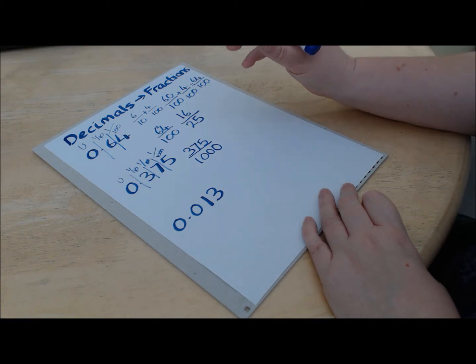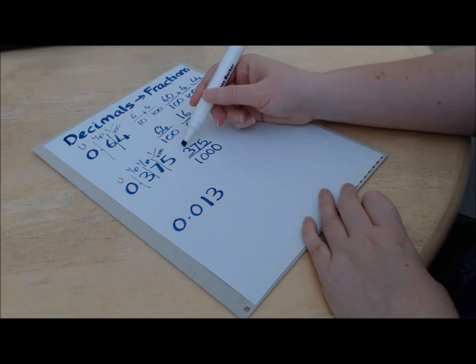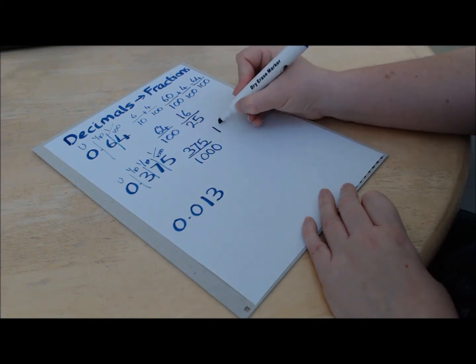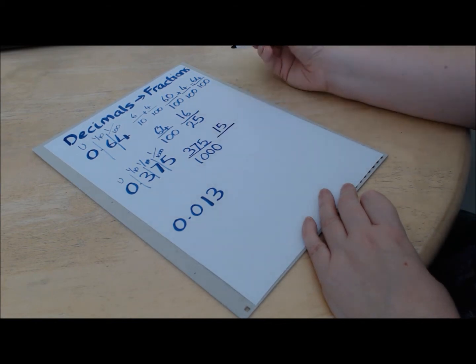OK, so there are four twenty-fives in every hundred, so there'll be twelve in three hundred and then there's three here as well. So that means we've got fifteen twenty-fives there.